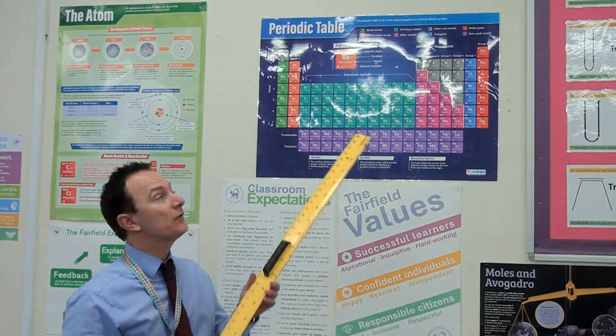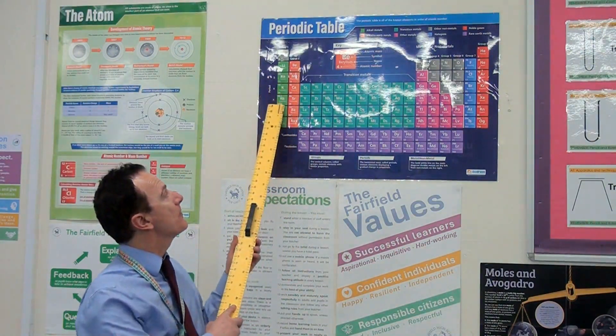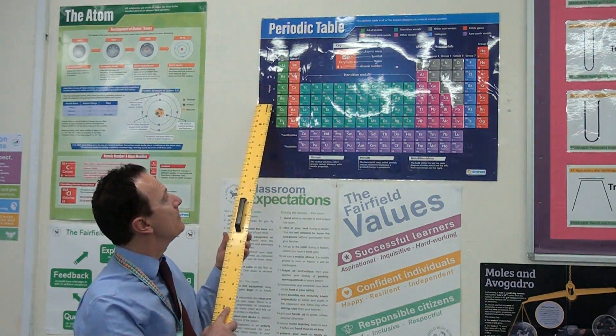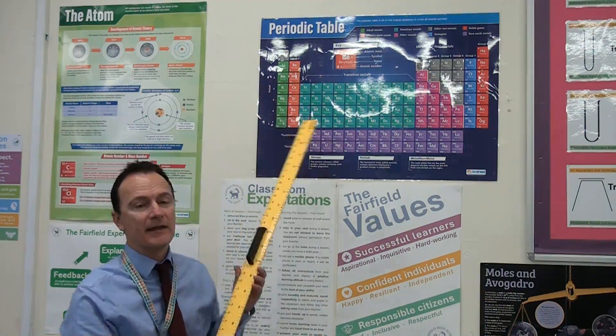Hi everyone, in this video we're going to be looking at the chemical reactions of the alkaline metals. The alkaline metals are found in group 1 of the periodic table: lithium, sodium, potassium, rubidium, cesium, and francium.